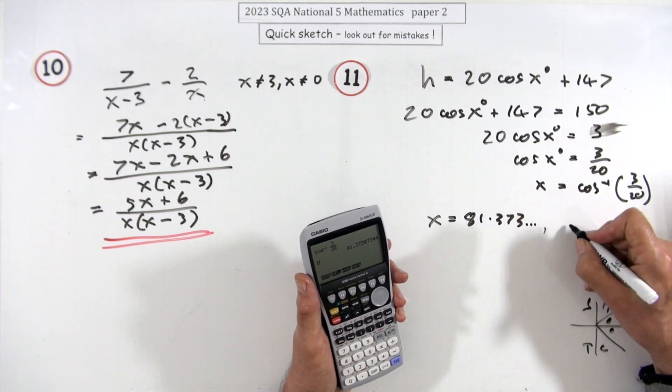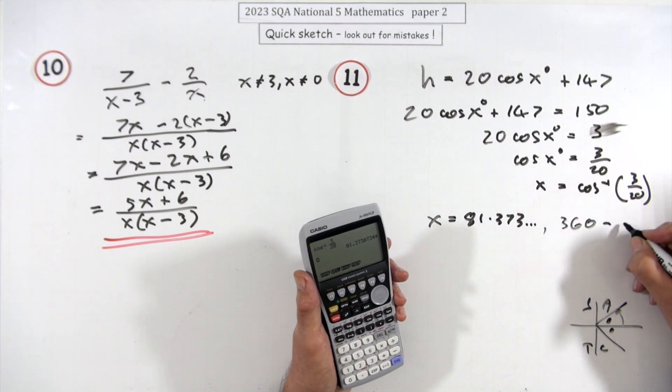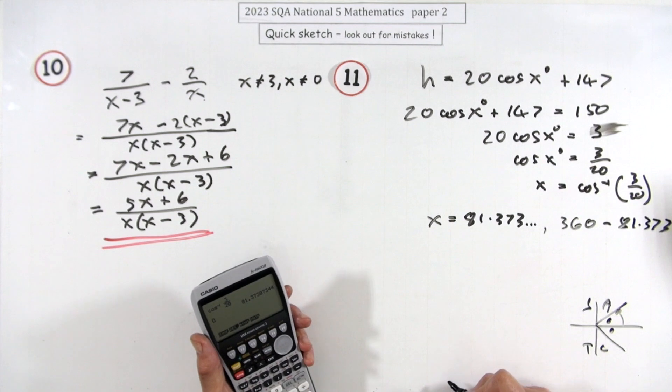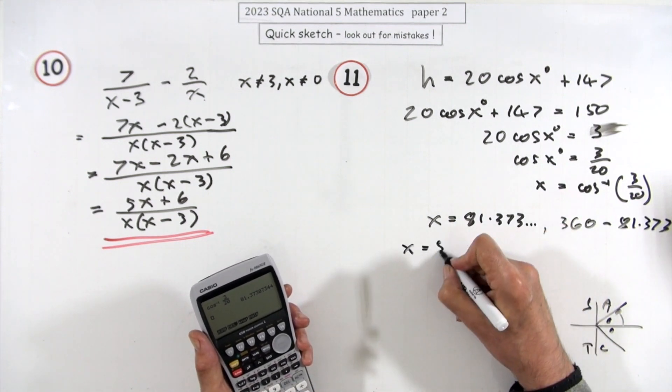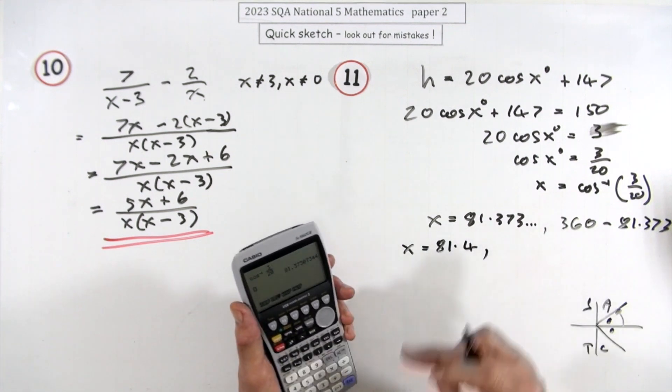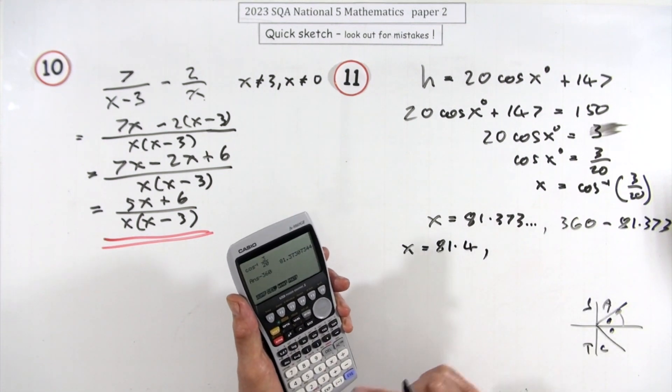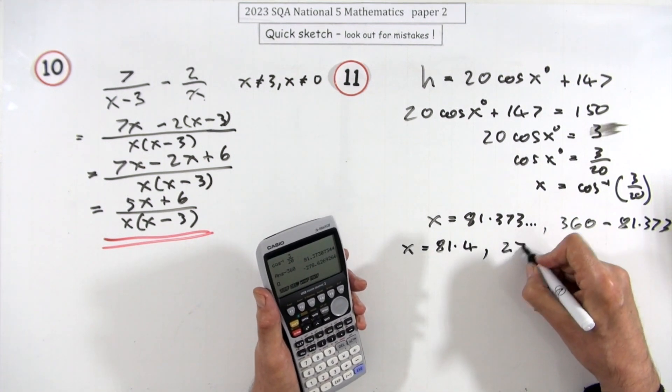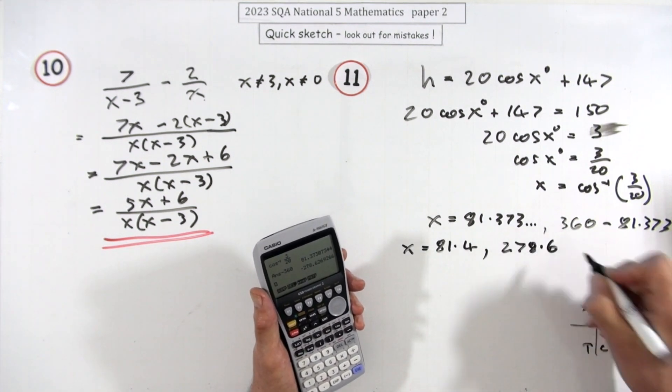So it's either the 81 or it's 360 minus it. You've either got that or you've got 360 minus 81.373 and so on. So the answers would be x is, now round it off, 81.4 or taking that away from 360, just ignoring the sign because I did it backwards, gives you 278.6.